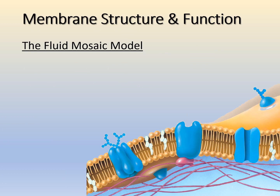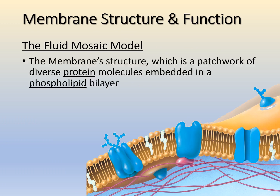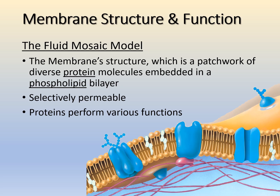Let's talk more about the cell membrane. It's called the fluid mosaic model, and the membrane structure is a phospholipid bilayer with proteins embedded within it. A key feature is selective permeability — some things can pass easily through the membrane via diffusion, while others have to be actively transported across using energy. We'll cover all the different proteins in the membrane and their functions.